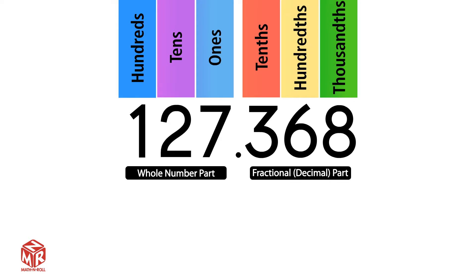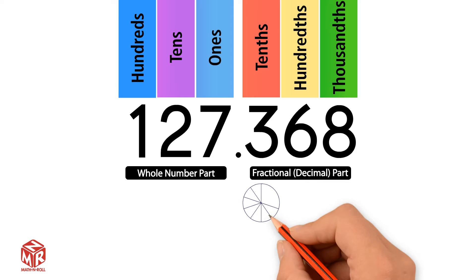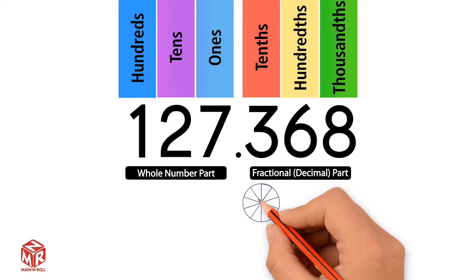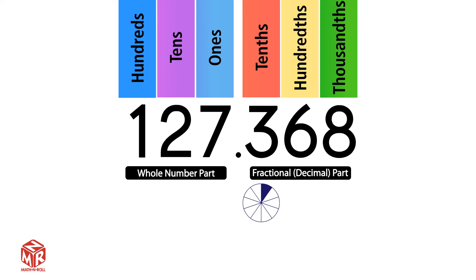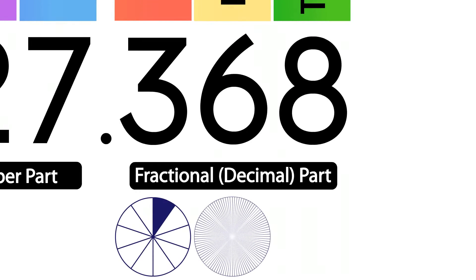The fractional part of the decimal represents parts of wholes. This part is always less than 1. 1 tenth is the same as 1 out of 10 parts. 1 hundredth is the same as 1 out of 100 parts. 1 hundredth is 10 times less than 1 tenth.